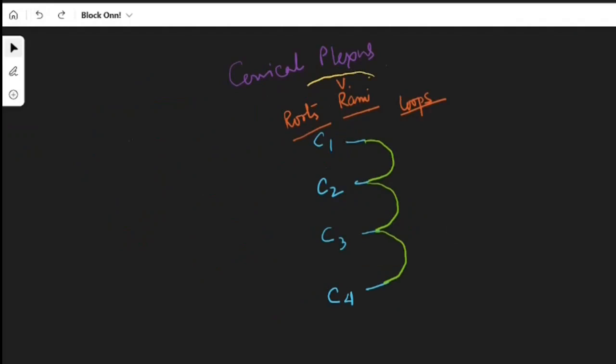The branches from the cervical plexus can be divided into branches from the roots or the rami, the branches from the loops between two roots as you can see these are three numbers, and the branches from the ansa cervicalis.